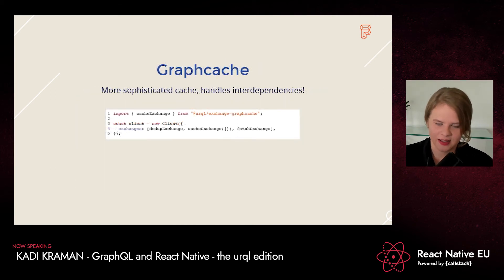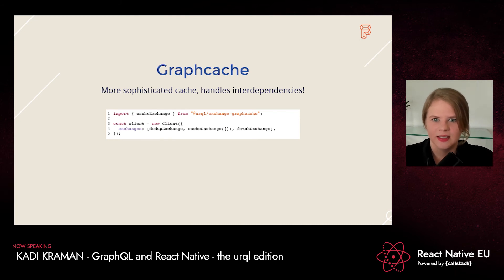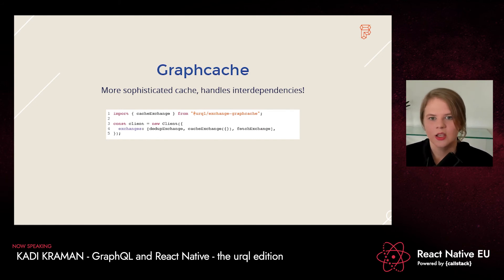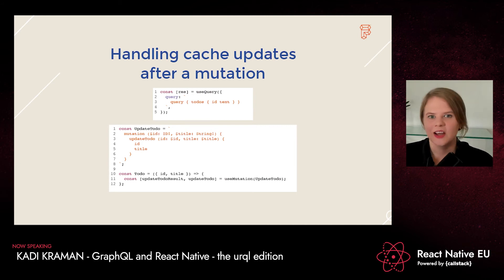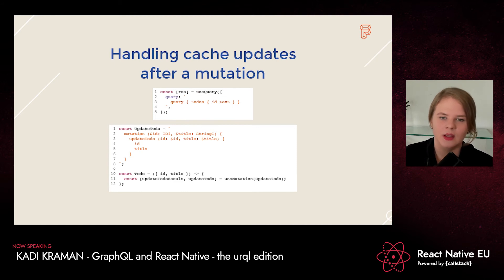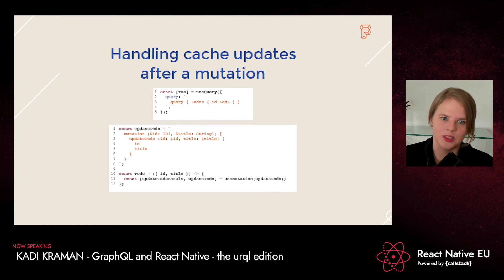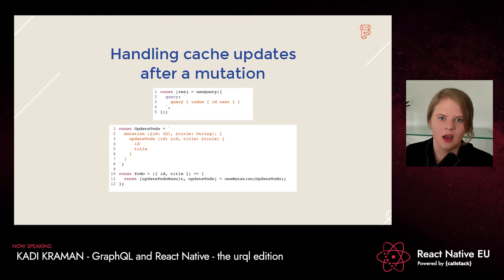Now let's talk about GraphCache. GraphCache, in my opinion, is the best thing about Urql. It's a more sophisticated cache because it handles interdependencies. To install GraphCache, you install urql-exchange-graphcache and add it to your list of exchanges with a config object. To see GraphCache in action, let's look at how you could handle cache updates after a mutation. Here we have a useQuery that queries a list of to-dos, and below we have a mutation that takes a particular to-do by ID and updates its title.